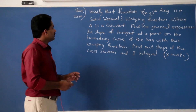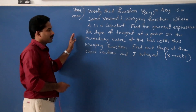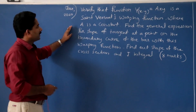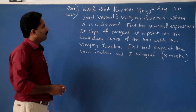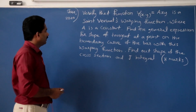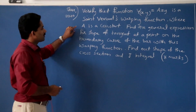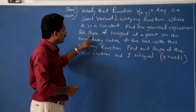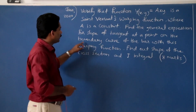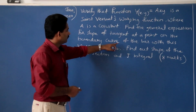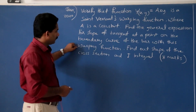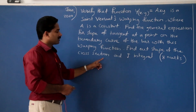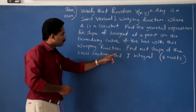Now, this is a 2020 January university question. Verify that the function ψ(x,y) = a·xy is a Saint-Venant warping function, where a is a constant. Then find the general expression for the slope of tangent at a point on the boundary of the curve of the bar with this warping function. Also find the shape of the cross section and find the j integral.